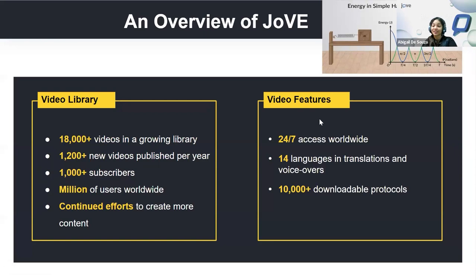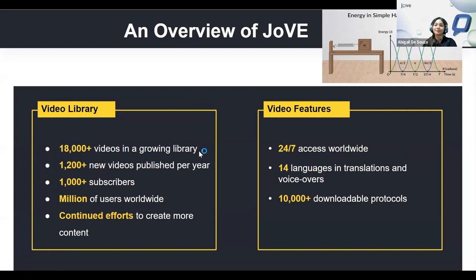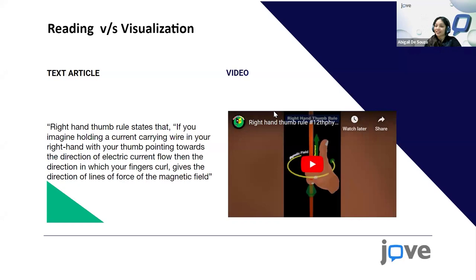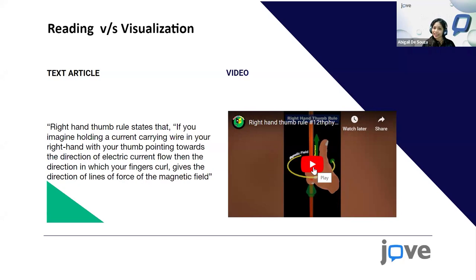Visual videos help enhance student retention much more compared to just reading text alone. If you have a video at hand, the retention power for a student is much greater. For example, even looking at this slide on the right-hand thumb rule, the first instinct is to go to the video and watch it, as opposed to reading the text alone. That's where JoVE comes in.